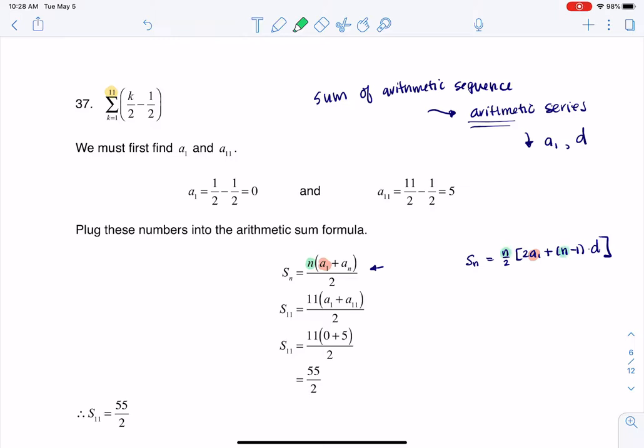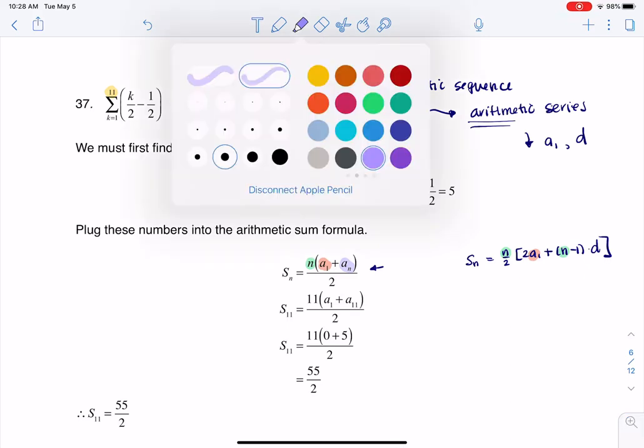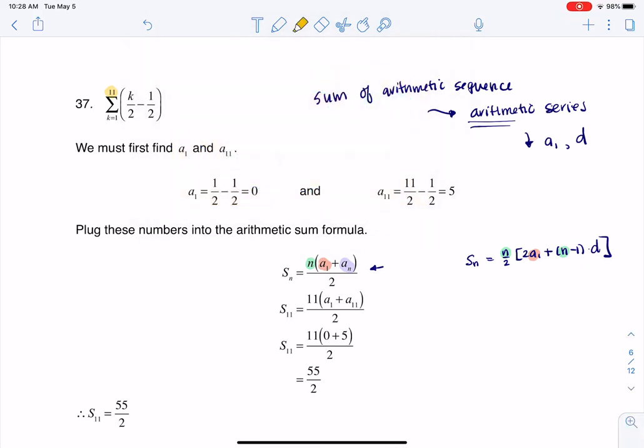The big difference between the two is what they have next. In this term they have A sub N, whereas in this formula they have D. So just depending on what you know, you can kind of help decide which of the two formulas you want to use.